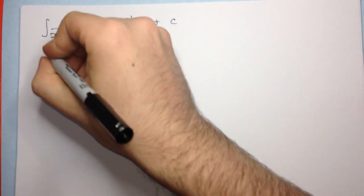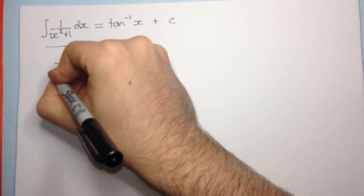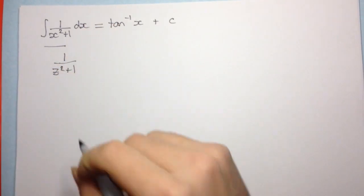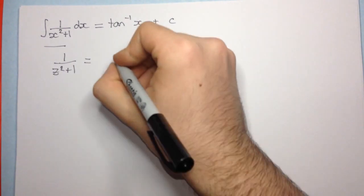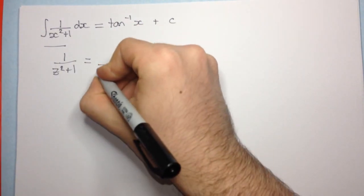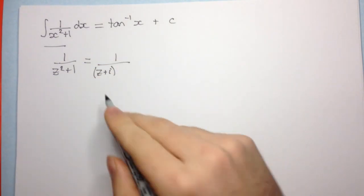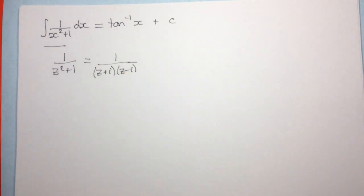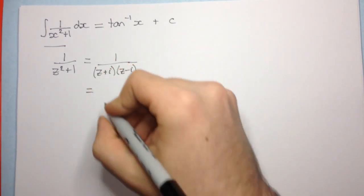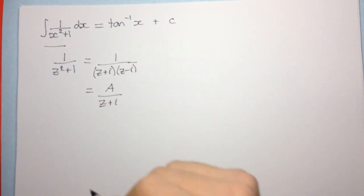So let's have a look at it. Let's look at 1 over z squared plus 1, where z is a complex number. Now we can decompose this into partial fractions. The roots or the factors of z squared plus 1 are z plus i and z minus i. Now we want to decompose this into partial fractions, and this is the way that we do it.